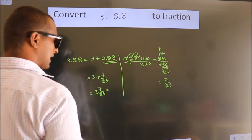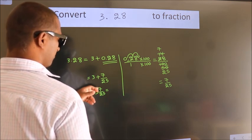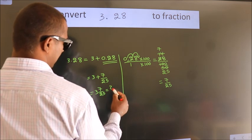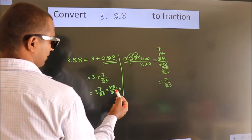And in improper fraction it is 3 into 25, which is 75 plus 7, which equals 82. So 82 by 25 is our fraction.